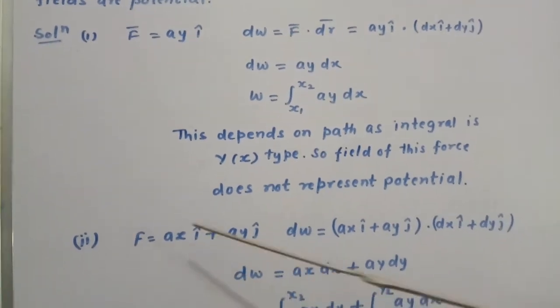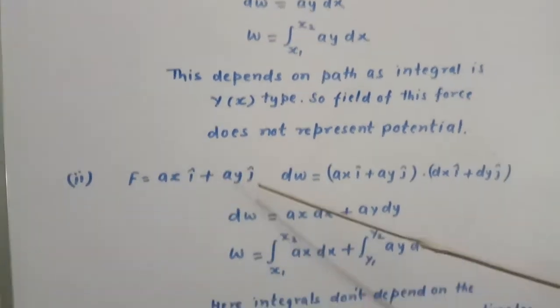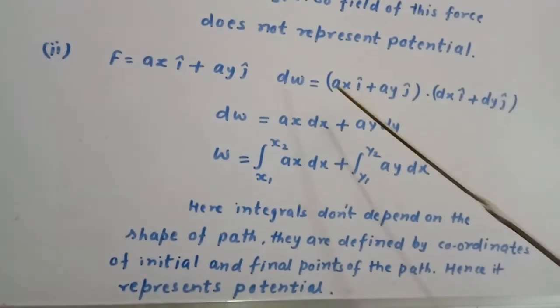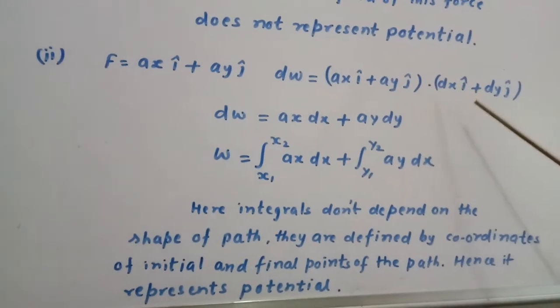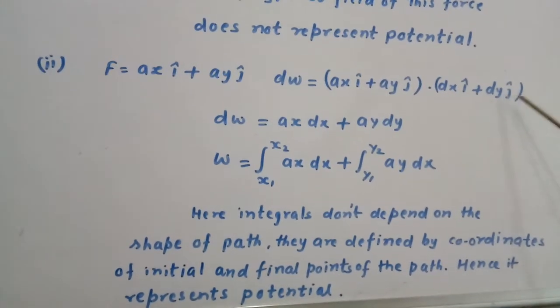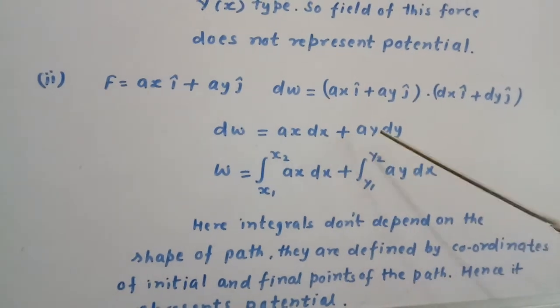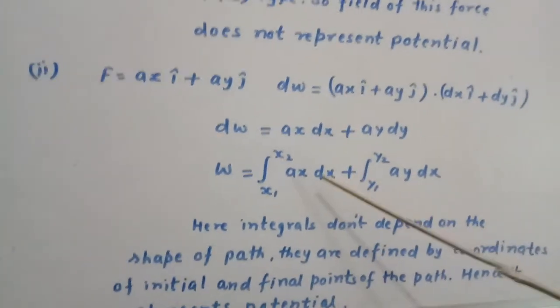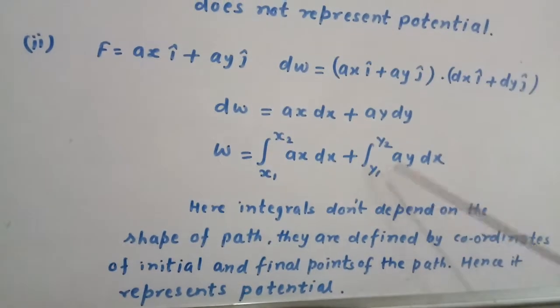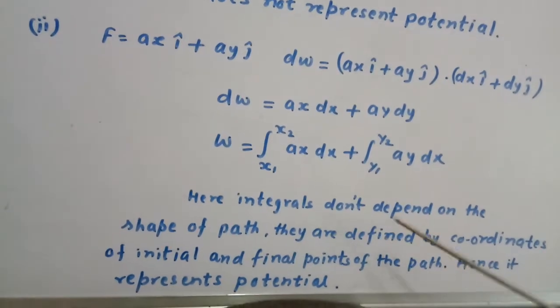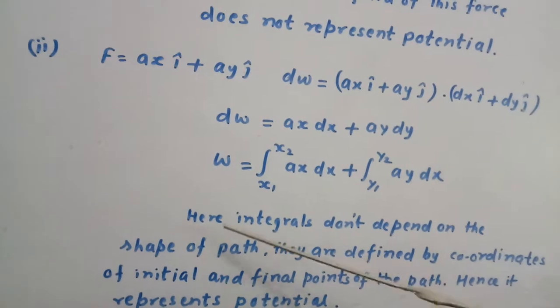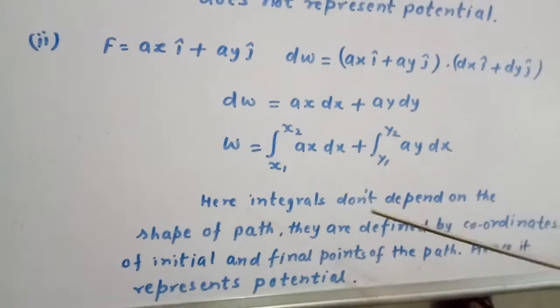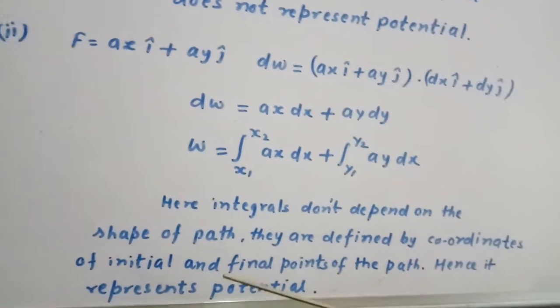Now consider second case: F = ax i cap plus ay j cap. Again, we calculate dW = (ax i cap plus ay j cap) dot (dx i cap plus dy j cap), that gives dW = ax dx plus ay dy, or W = integral from x1 to x2 of ax dx plus integral from y1 to y2 of ay dy. Here, both integrals don't depend on the shape of the path. They are defined by coordinates of initial and final points of the path. Hence, it represents potential.